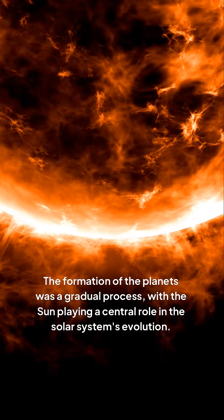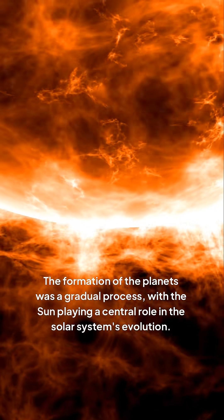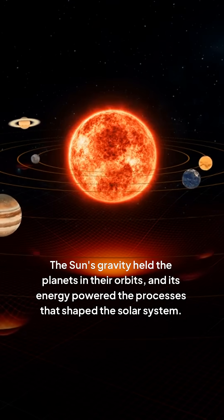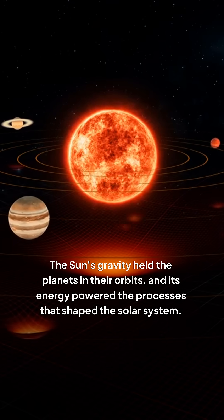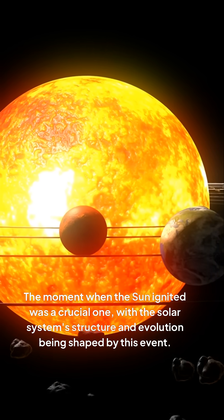The formation of the planets was a gradual process, with the sun playing a central role in the solar system's evolution. The sun's gravity held the planets in their orbits, and its energy powered the processes that shaped the solar system.